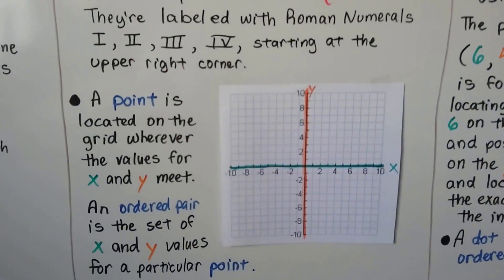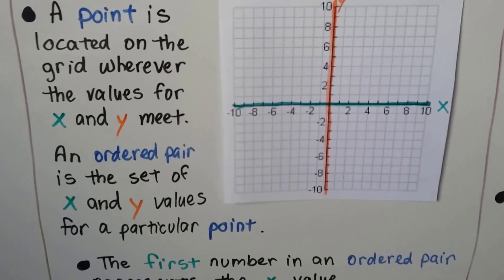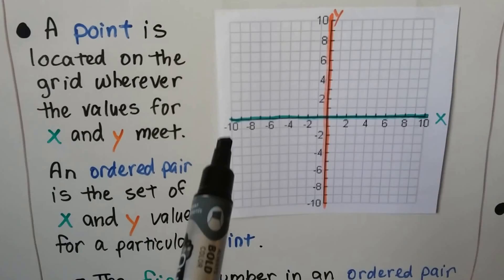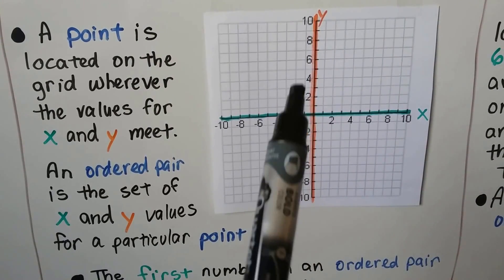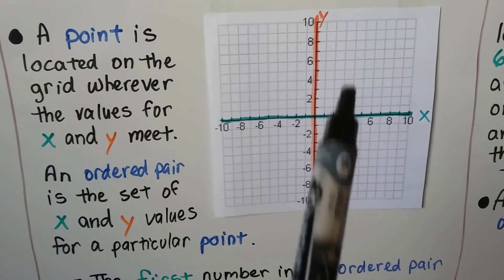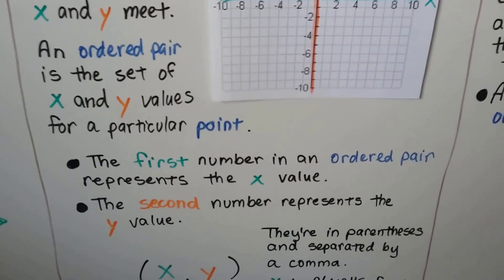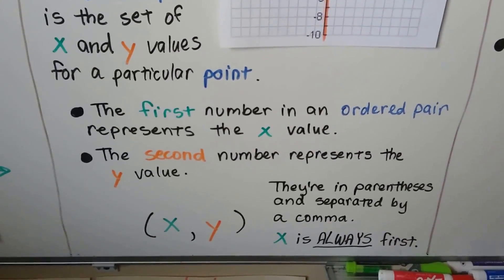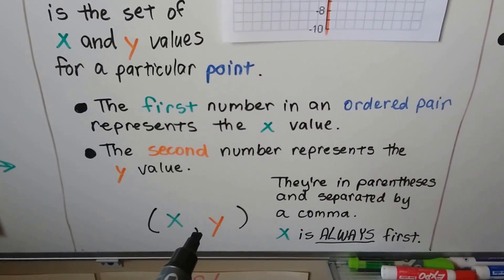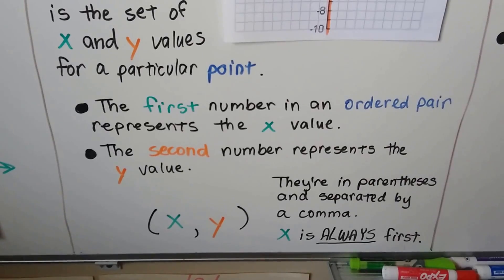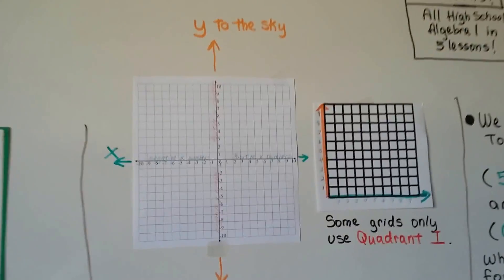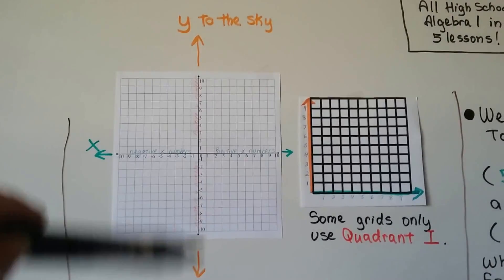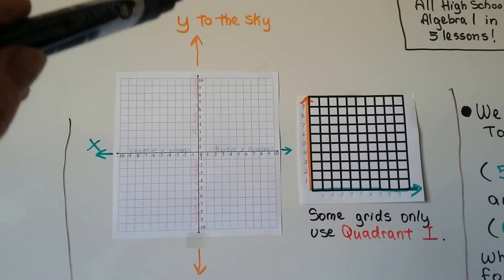A point is located on the grid wherever the values for x and y meet. An ordered pair is a set of x and y values for a particular point. So wherever the x value is and the y value is, we follow them to see where they would intersect. The first number in an ordered pair represents the x value, and the second number represents the y value. They're in parentheses, separated by a comma, and the x value is always first. Another thing I tell people to remember: y to the sky. That's how you remember that that's the one that's vertical.